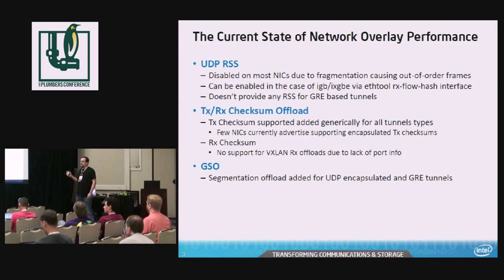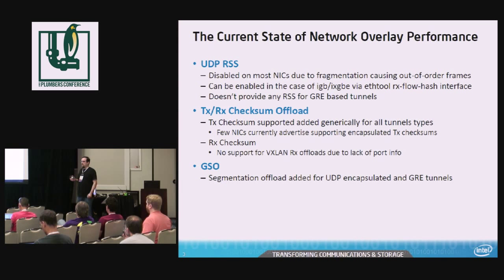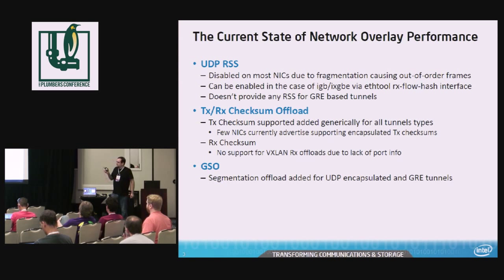The problem is it can do the outer checksum in the case of UDP. For NVGRE, most NICs don't do GRE — at least none of our Intel NICs do NVGRE checksums — so they're not going to do that. And because it's NVGRE, it doesn't look at the inner payload, because most of these aren't tunnel-aware NICs.